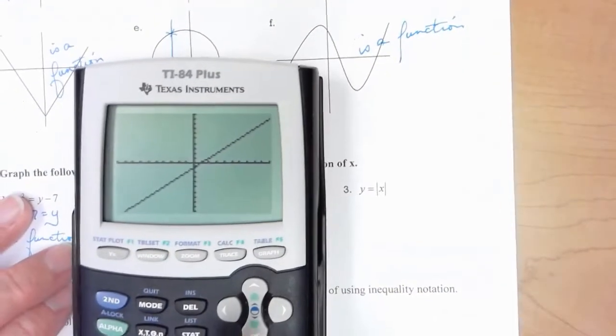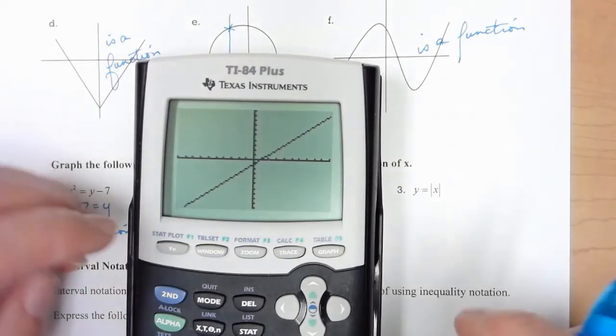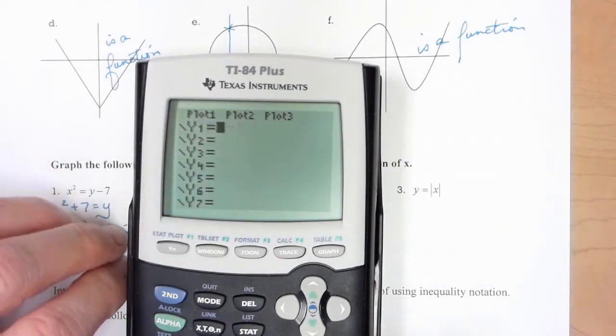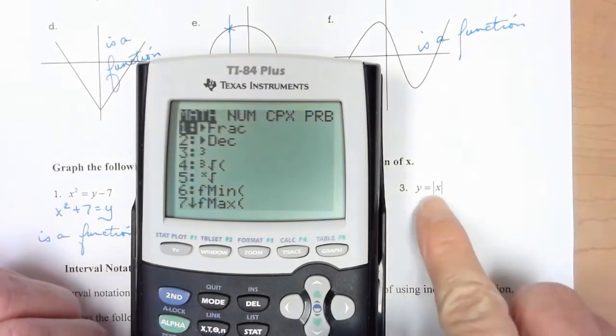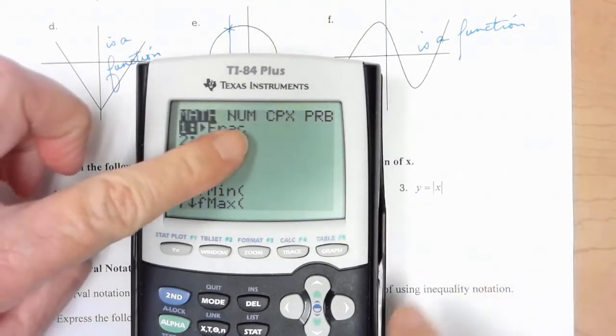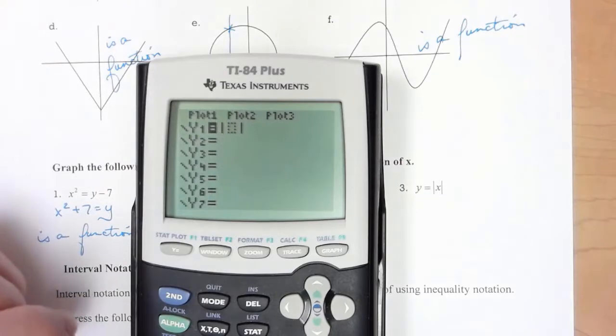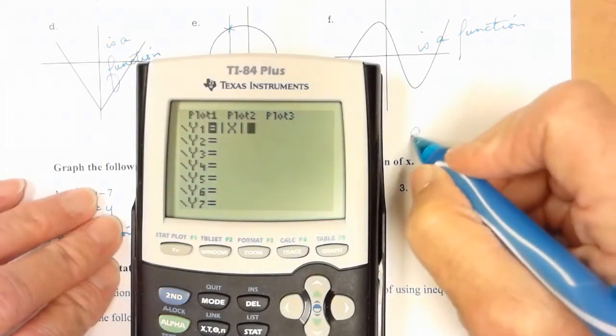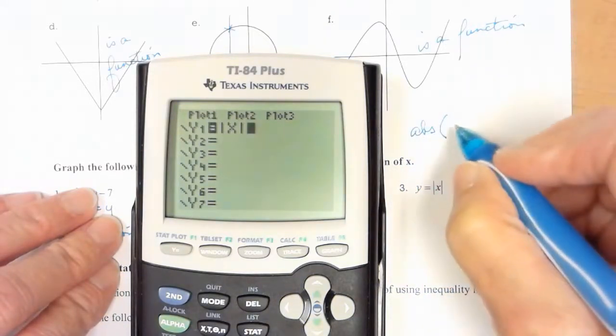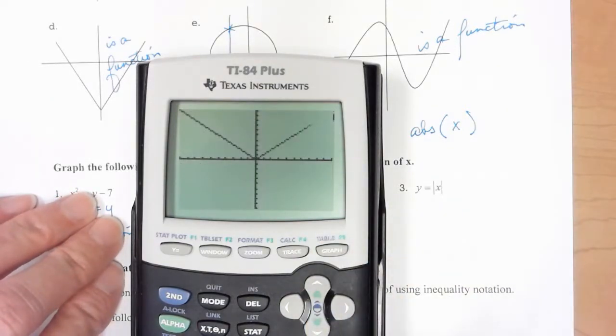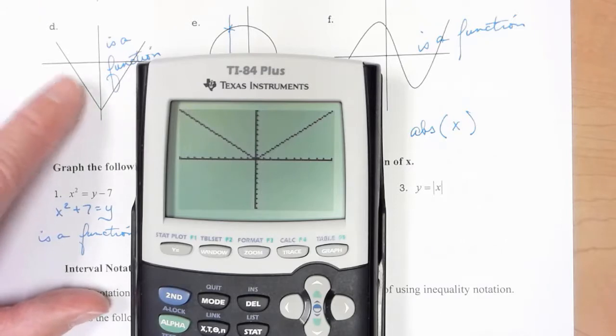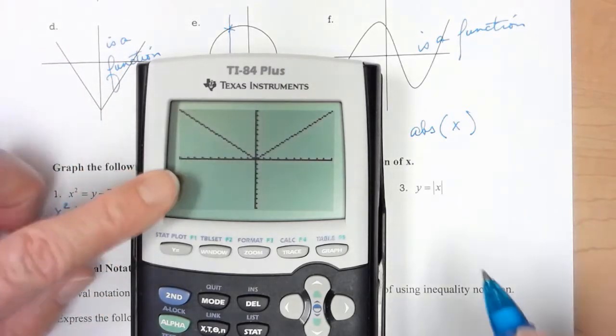I put this one in so I can show you where absolute value is. Go back to y equals and clear. If you go to math, an absolute value works on a number. Go over to number and it's the very first thing. Now if you have the new operating system you actually will have the nice little absolute value bars. But if you don't, what you'll see is abs with a parentheses. You put x in here and you close it. It does the exact same thing. Ask it to graph. So the d right here was an absolute value. And if that's a function. This is a function.